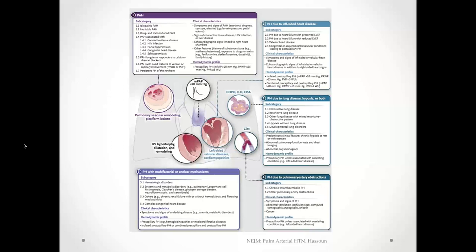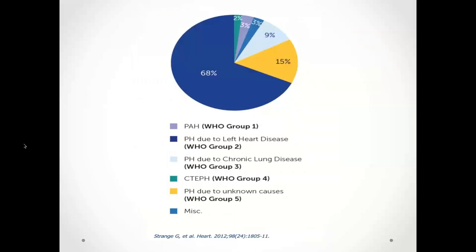There are many different subcategories of etiologies within each WHO section. Regarding epidemiology, pulmonary hypertension is largely a disease of the left side of the heart. About 70% of diagnosed PH cases are Type 2, with the remaining ~30% comprised of the others — about 15% being Type 5. Surprisingly, only 9% are due to chronic lung disease and hypoxia, and only 3% of all diagnosed cases are true Type 1 pulmonary arterial hypertension.